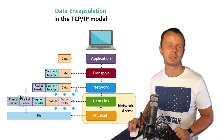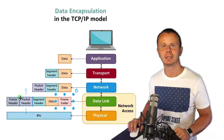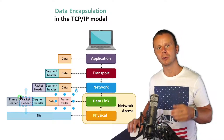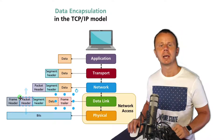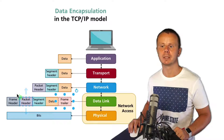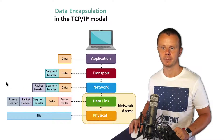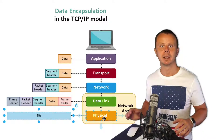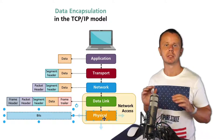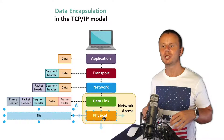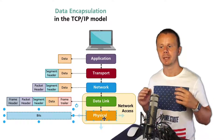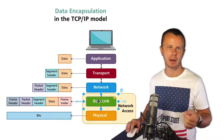The data link layer also adds a frame trailer that contains the checksum of the frame, which is used for error detection. If this checksum does not match on the recipient side, the frame is simply discarded. Finally, data is transmitted as bits, and the physical layer does not care at all about the data content — it simply receives data from the data link layer.